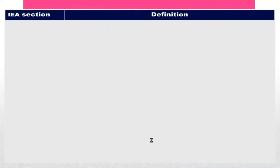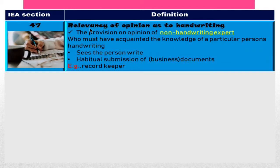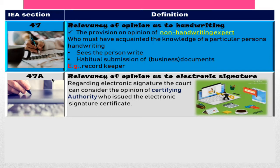Section 47 IEA is about the relevancy of opinion as to handwriting, where the court accepts the opinion of a non-handwriting expert — specifically someone who has acquired knowledge of a particular person's handwriting, like by seeing the person write, or as a habitual record keeper where that person's documents and handwriting are present. The court also considers the opinion of the certifying authority who has issued the certificate.